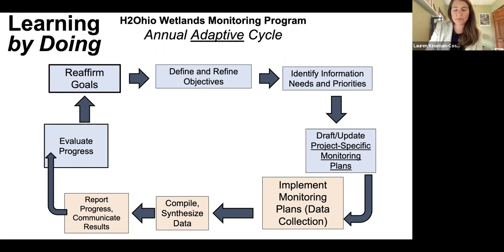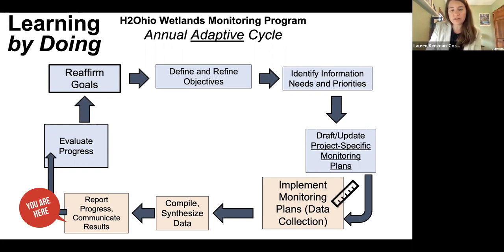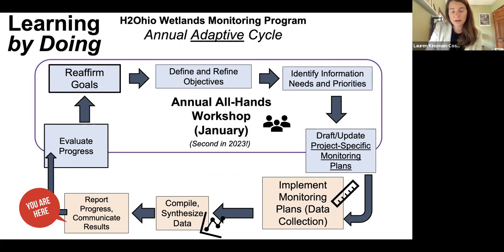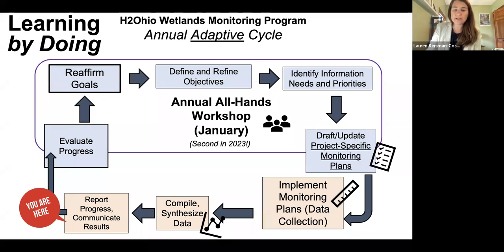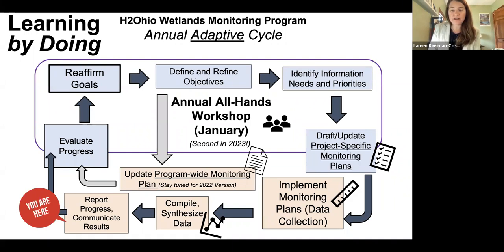We are learning by doing, embracing an adaptive cycle. We are still in the middle of — but nearing the end of — our first field season of routine monitoring, furiously compiling and synthesizing data. In January, we will all gather in person in Columbus for our annual all-hands workshop, where we'll have a lot of face time, intentional evaluation of our progress, revisiting our goals and redefining our objectives. The main products that come out of these are our project-specific monitoring plans and our program-wide monitoring plan which outlines our policies and framework. We're working on updating our 2022 version of that right now, and that's where you'll be able to find more details than what I'm sharing here.